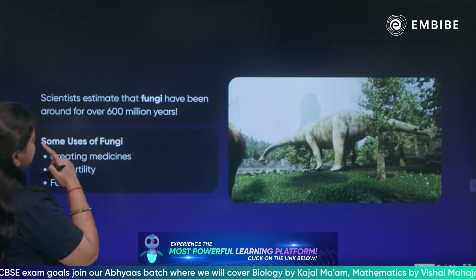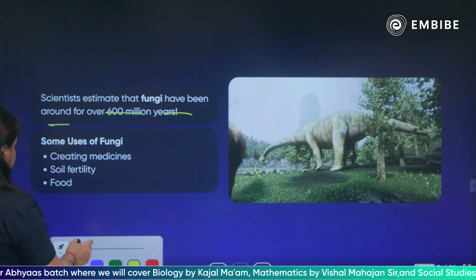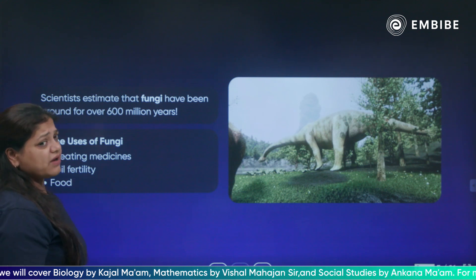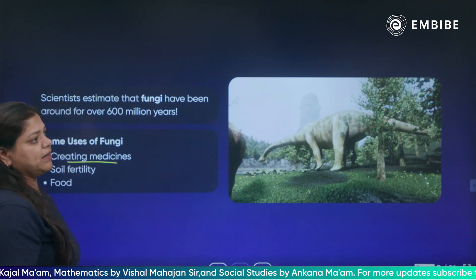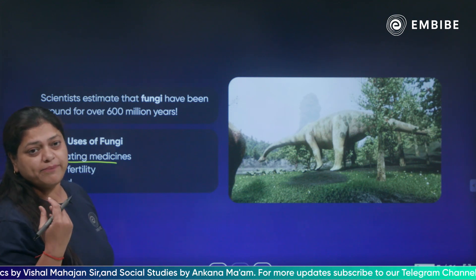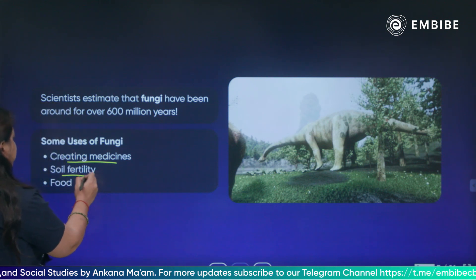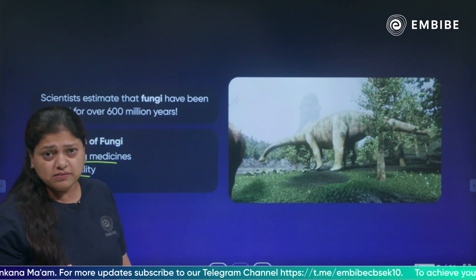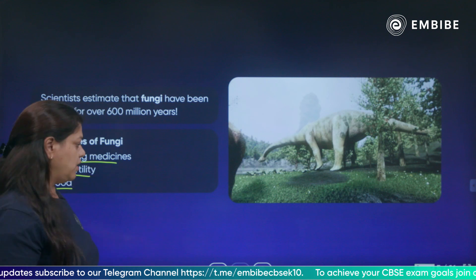Scientists estimate that fungi have been around for over 600 million years. Looking at some uses of fungi — they are used in creating medicine. Penicillin is a type of antibiotic whose source is fungi. Fungi also contribute to soil fertility and are a source of food — mushrooms are fungi and we use them as vegetables.